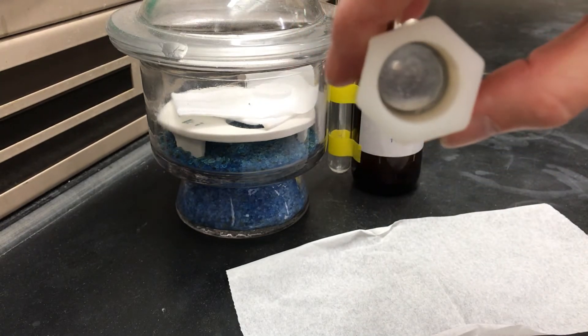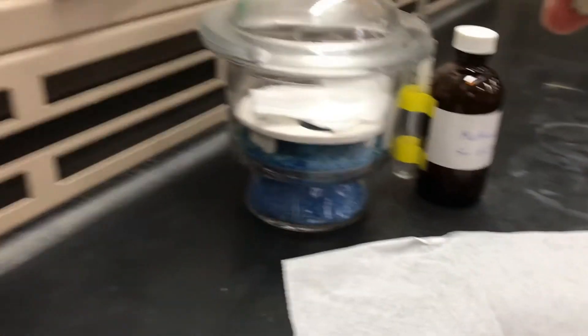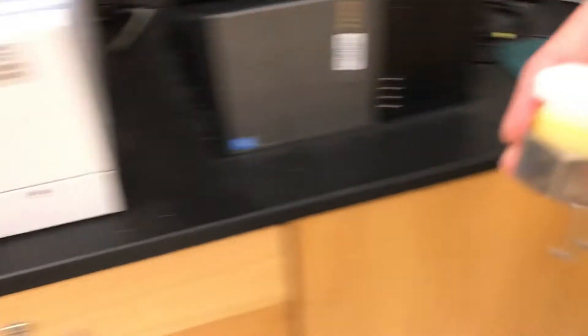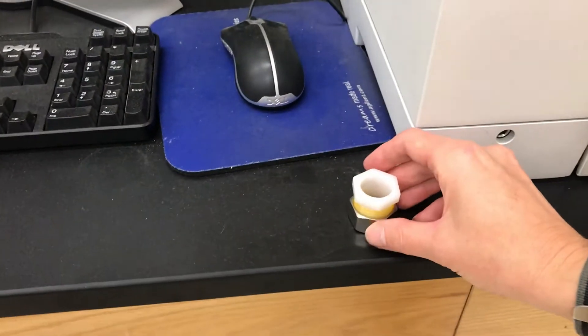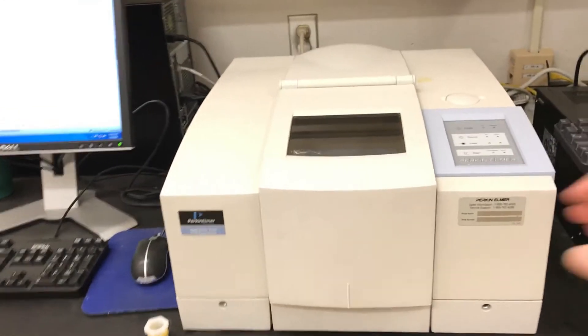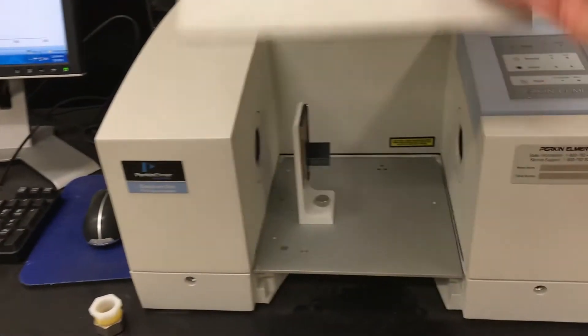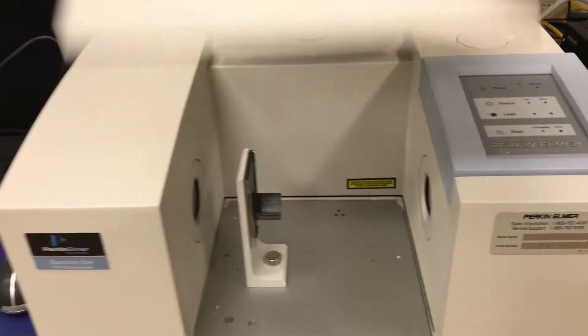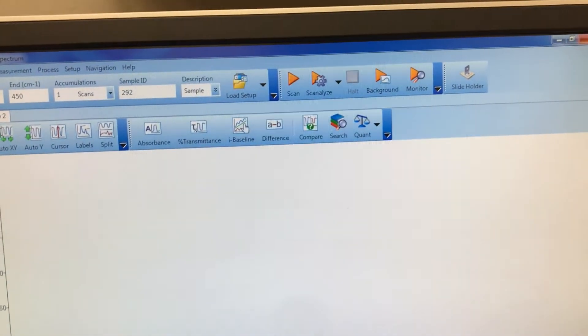So now I've got a thin layer of my sample between two salt plates. We'll bring that over to our instrument which is this white box and first we want to make sure that there's nothing inside the instrument, that it's empty, because the very first thing you do is over at the computer push on the background button.